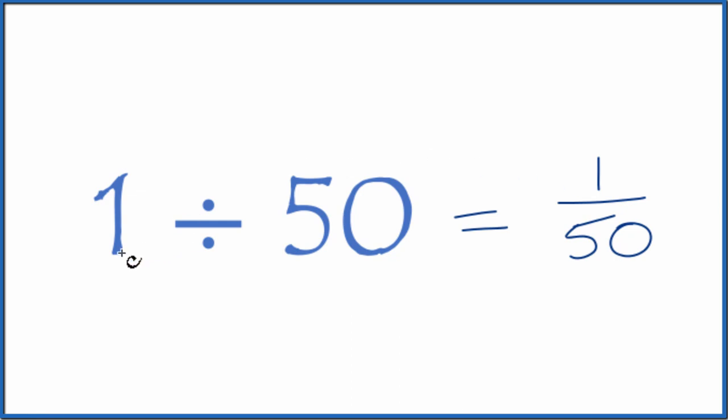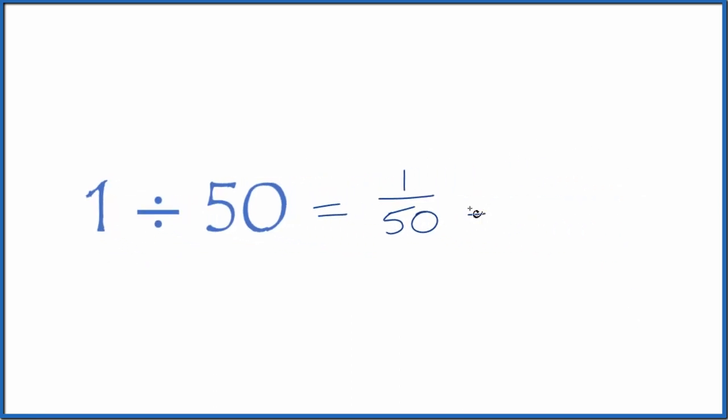And you could, on a calculator, take and divide 1 by 50. We have our 1 divided by 50, that gives us 0.02. So 1 divided by 50 equals the fraction 1 50th, or the decimal 0.02.